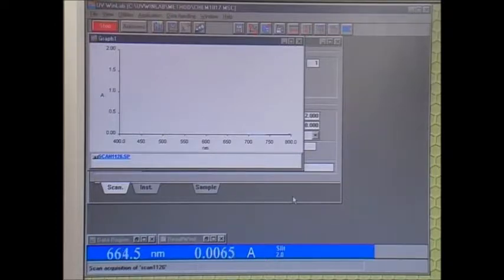The horizontal axis is the wavelength and the vertical one is the absorbance, which is a measure of the amount of light absorbed by the sample.